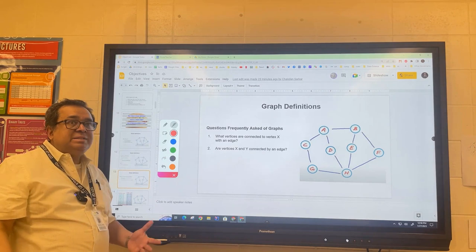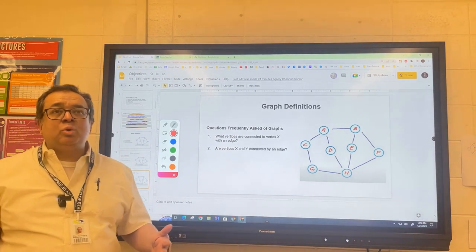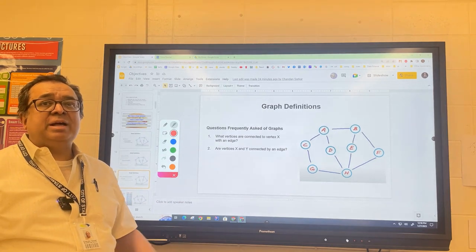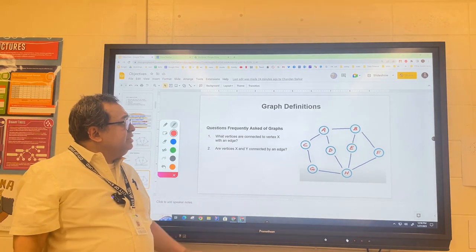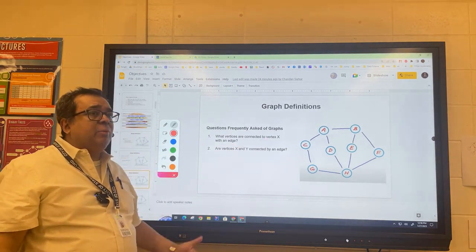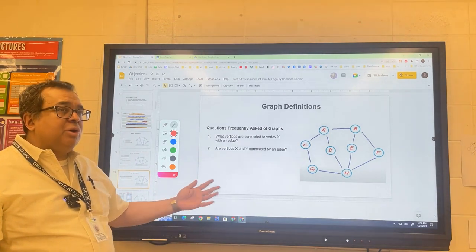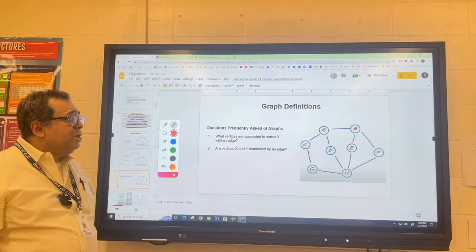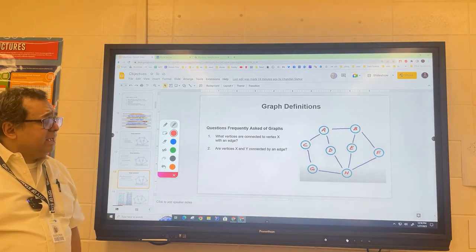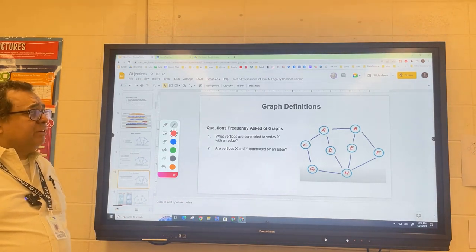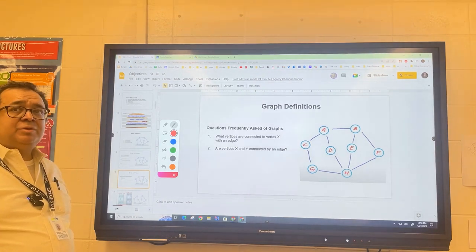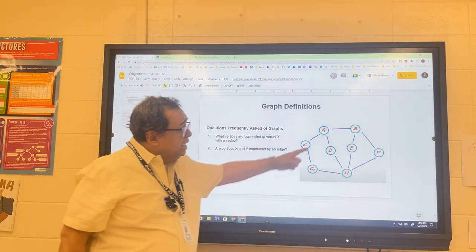When we process graphs, there are two questions that we frequently need to ask about the graph in our processing. We are given some vertex x and we want to know what are all the nodes or other vertices that are connected to that vertex. For example, if I say I would like to know what are all the vertices connected to vertex e, what would they be? It would just be b and h. You see that right?